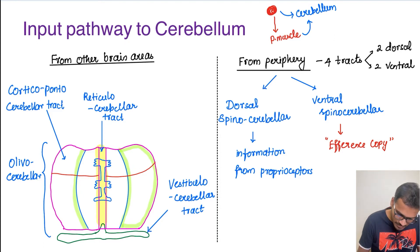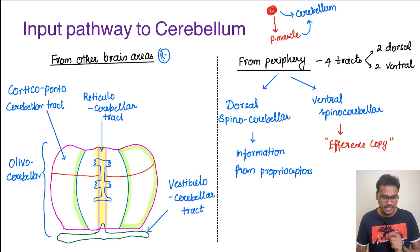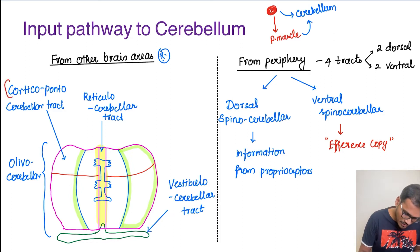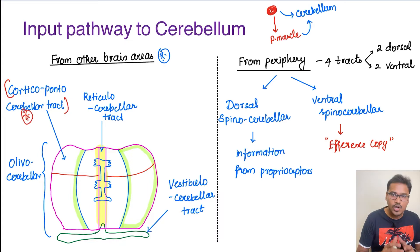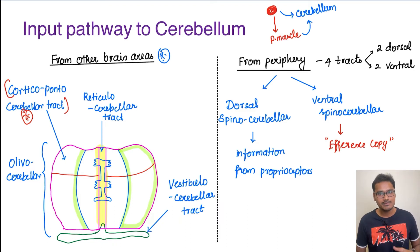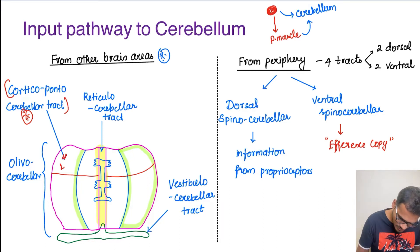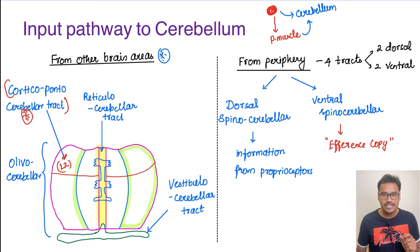One tract is very important — the Cortico-Ponto-Cerebellar tract. It is the most important tract. All the blueprint information is carried by this tract, and it enters the cerebellum. Which part of the cerebellum is most advanced? It is the lateral zone. This tract goes into the lateral zone of the cerebellum, and it coordinates with the cortex to help coordinate movements of the person.